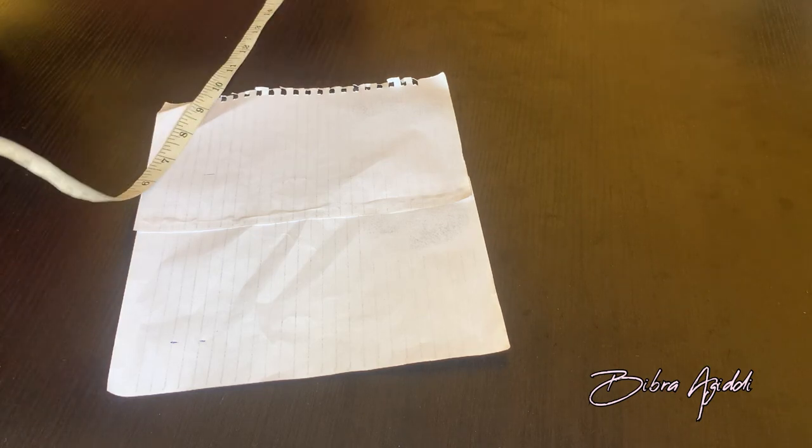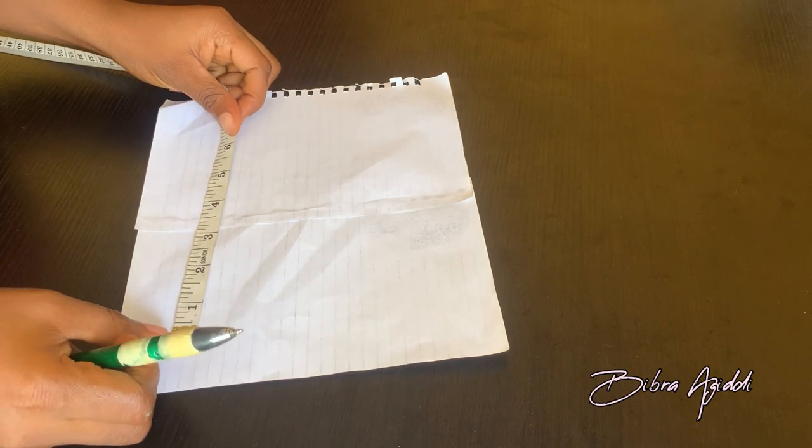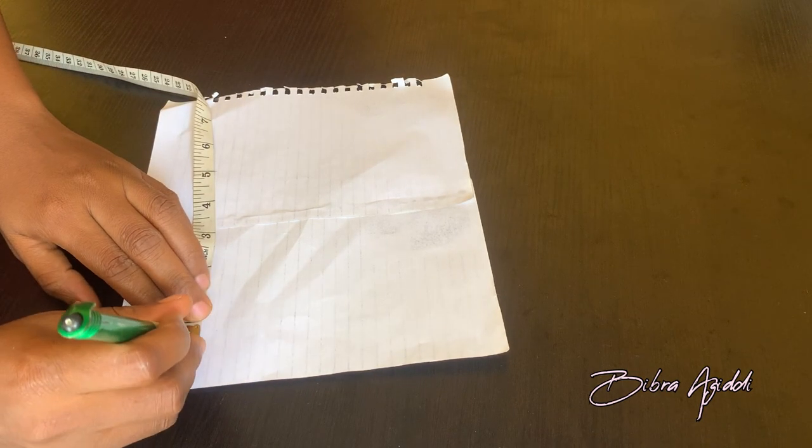So guys, for making this closure pattern you'd need a plain piece of paper, your measuring tape, a pen, your ruler. All items will be listed in the description box.